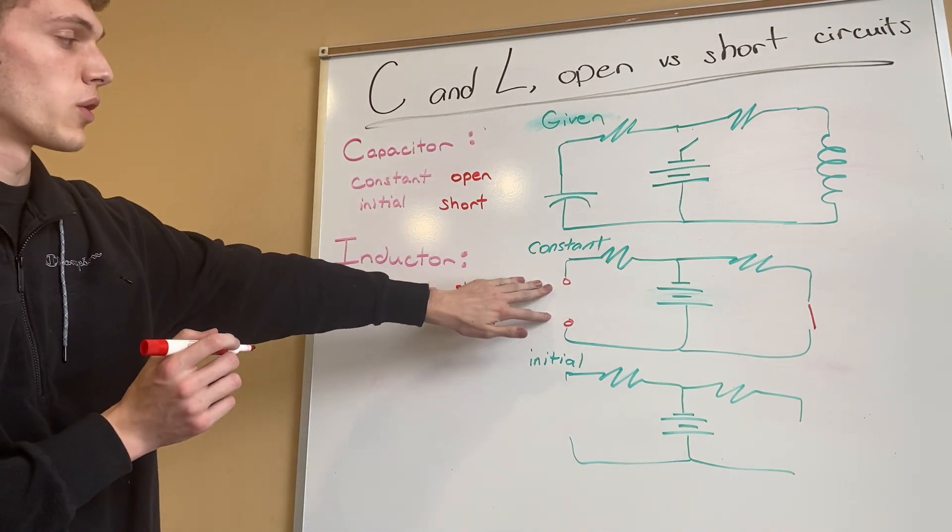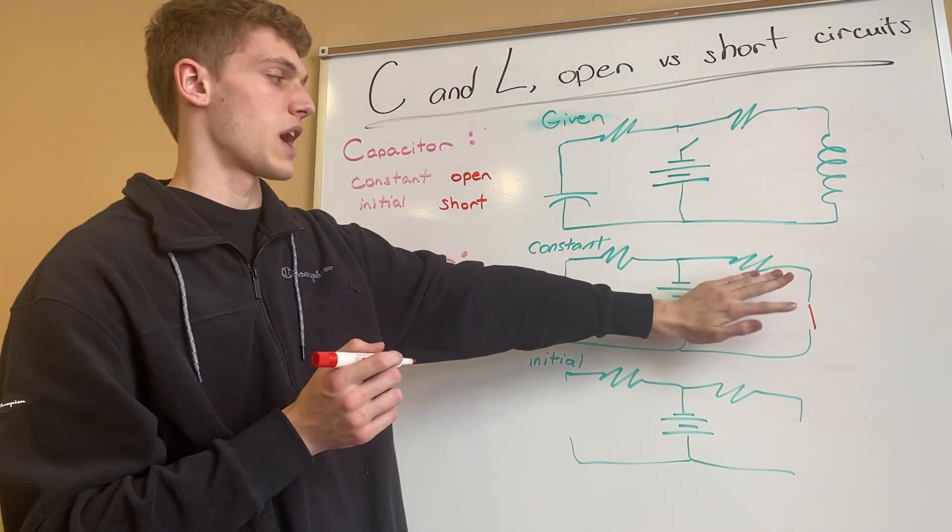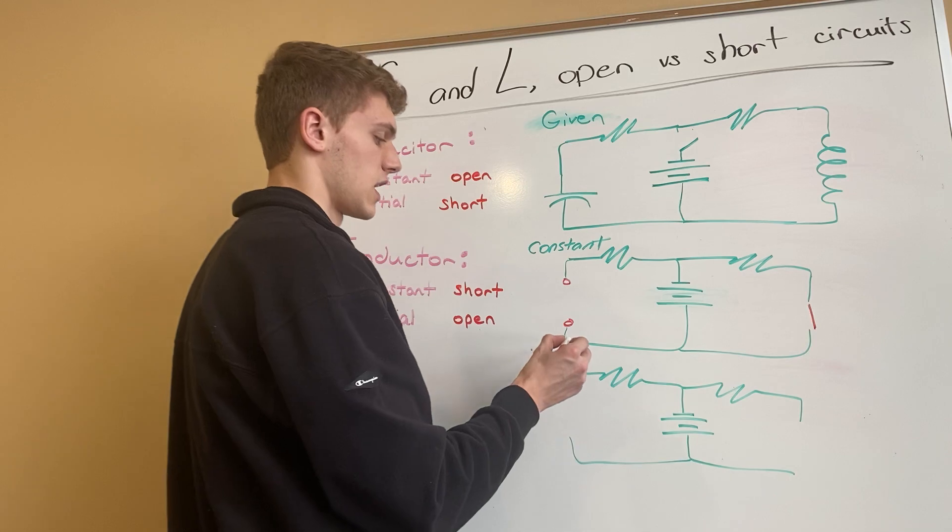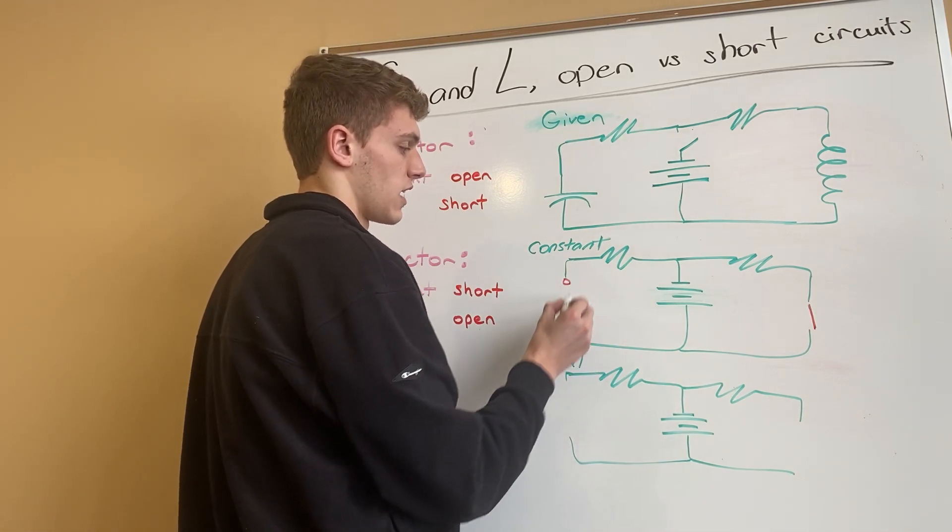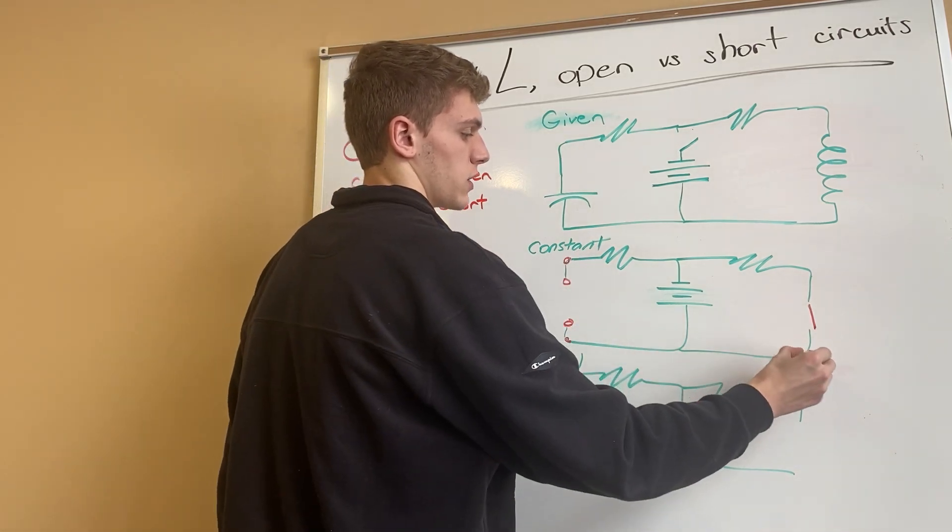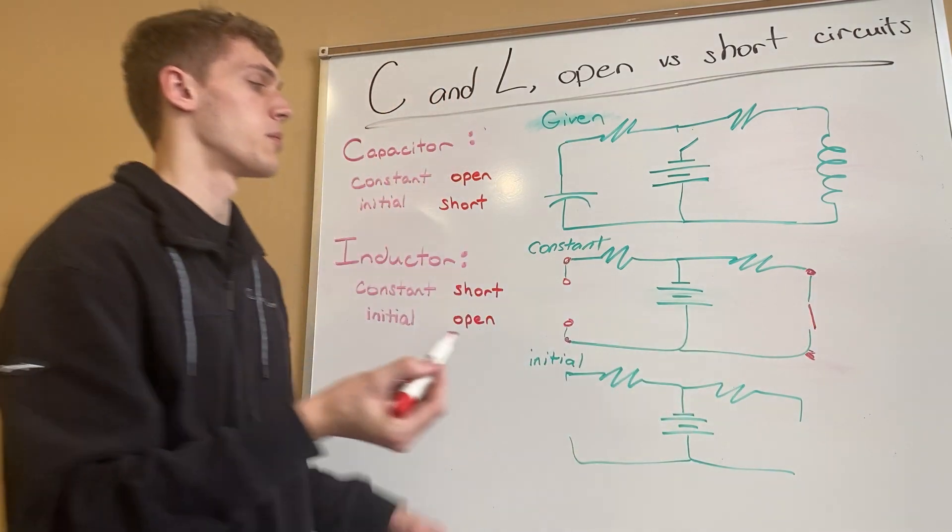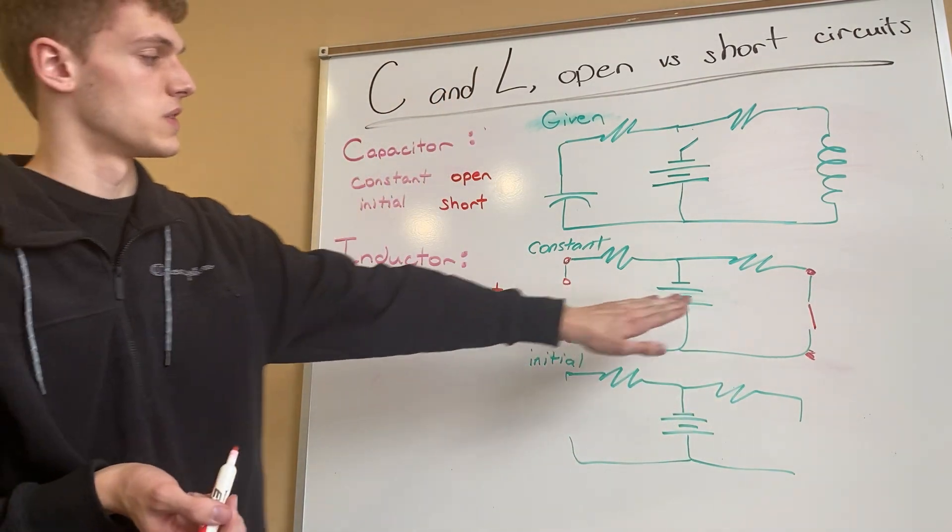So this side would have no current flowing through it where this side would have a lot of current flowing through it, and if we were asked to find any of the nodes here or here or here or here, we would be able to find that knowing that this is an open and this is a short.